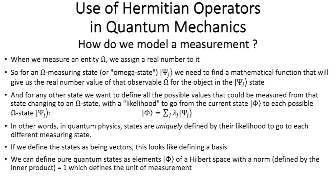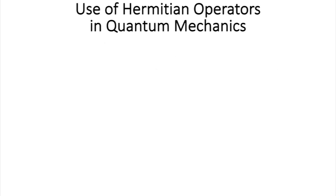And so, we can define the states, the pure states, as element of a Hilbert space, that we defined before, with a norm equal to one, and which defines the unit of measurements. Now, all pure states can be represented as unit vectors, that's our conclusion for now.